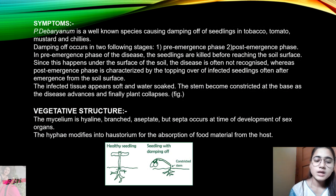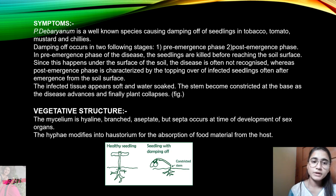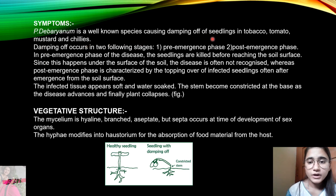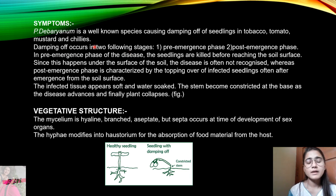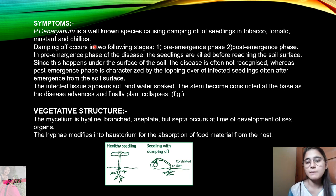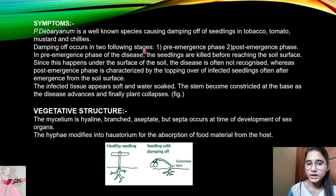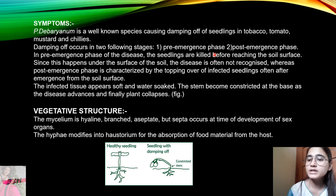Talking about the symptoms of Pythium: Pythium debrianum is a well-known species causing damping off of seedlings in tomato, tobacco, mustard, and chili. Damping off occurs in two stages: the first is the pre-emergence phase and the second is the post-emergence phase.